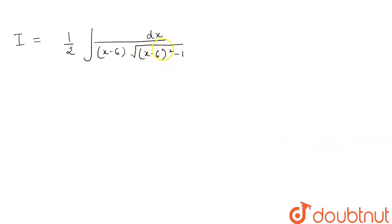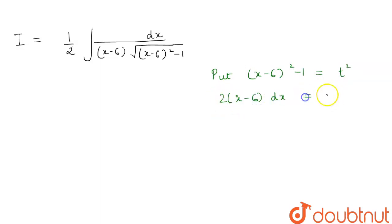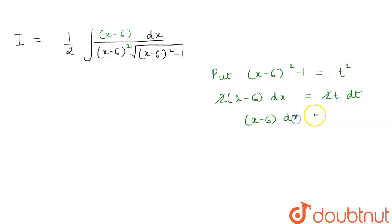So our I will be equal to 1 by 2 integration of dx divided by (x minus 6) times under root of (x minus 6) squared minus 1. We now substitute (x minus 6) squared minus 1 equal to t squared. Differentiating both sides gives 2(x minus 6) dx equal to 2t dt, so (x minus 6) dx equals t dt. From the substitution, (x minus 6) squared equals t squared plus 1.